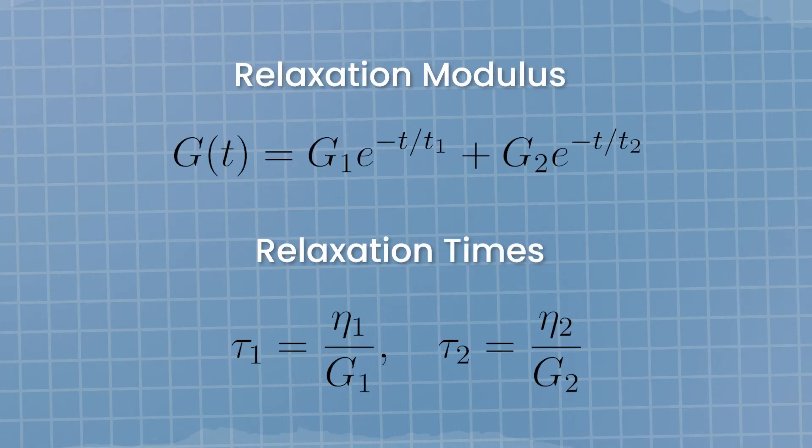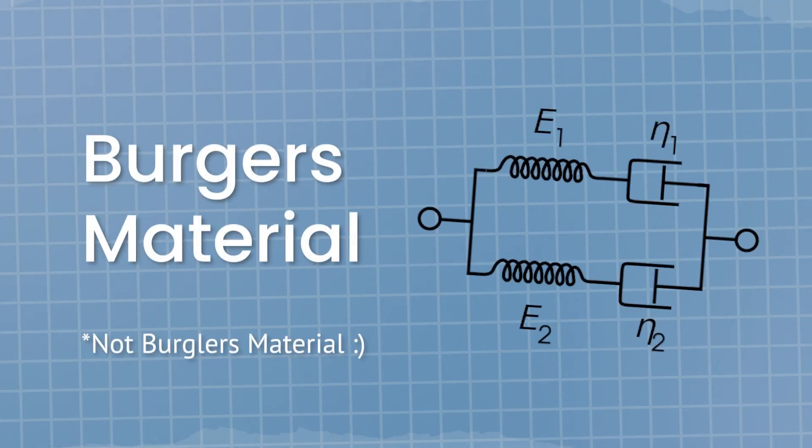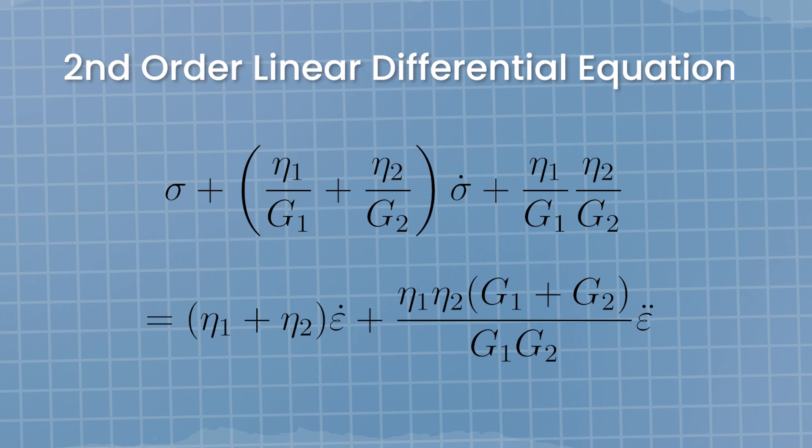Of course, we could also use two relaxation times and obtain, for example, the so-called Burgers material, another very interesting material model. It can also be described as a second-order linear differential equation.